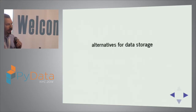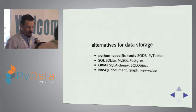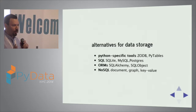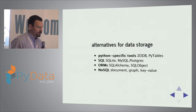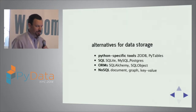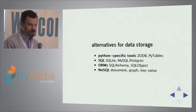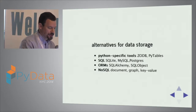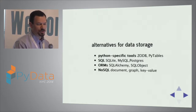This is all about storage. All of us have had the experience of having data that we need to store, whether it's a web application or whatever your situation is — it's almost ubiquitous that you have to store data in some sort of back end. There are some Python-specific tools like ZODB and PyTables, the venerable SQL options like Postgres and SQLite, various ORMs, and then newer NoSQL options: document data stores, graph databases like Neo4j, and key value stores.